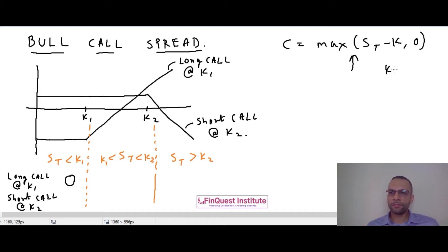Let's say K is 50. Now if the stock price at maturity ST happens to be let's say 40, then I have a condition C equal to max of minus 10 or zero. So I'll get a payoff of zero here.